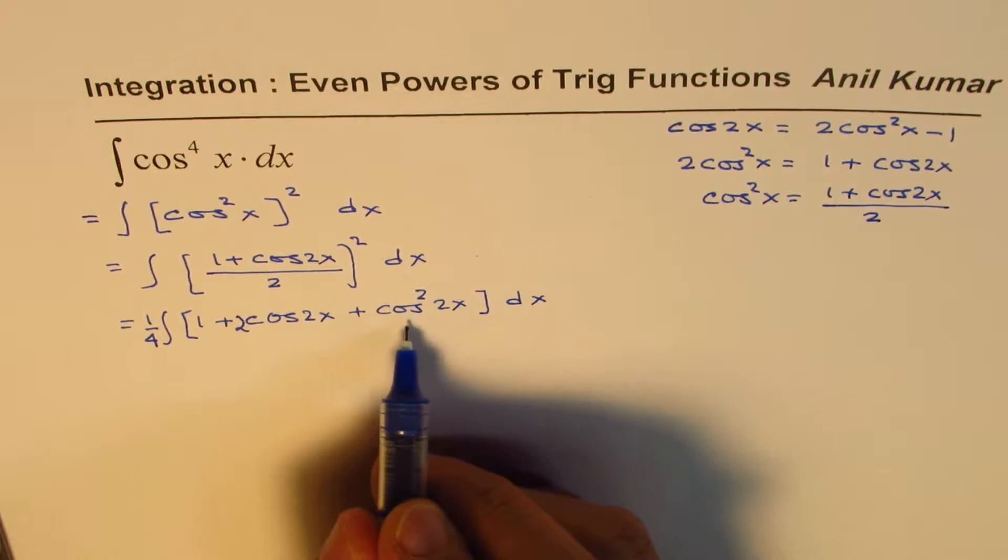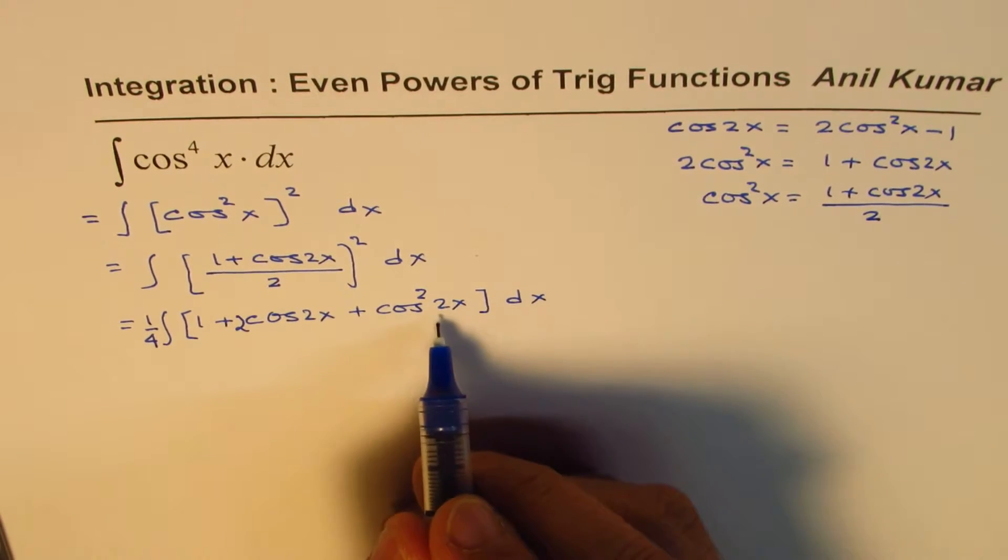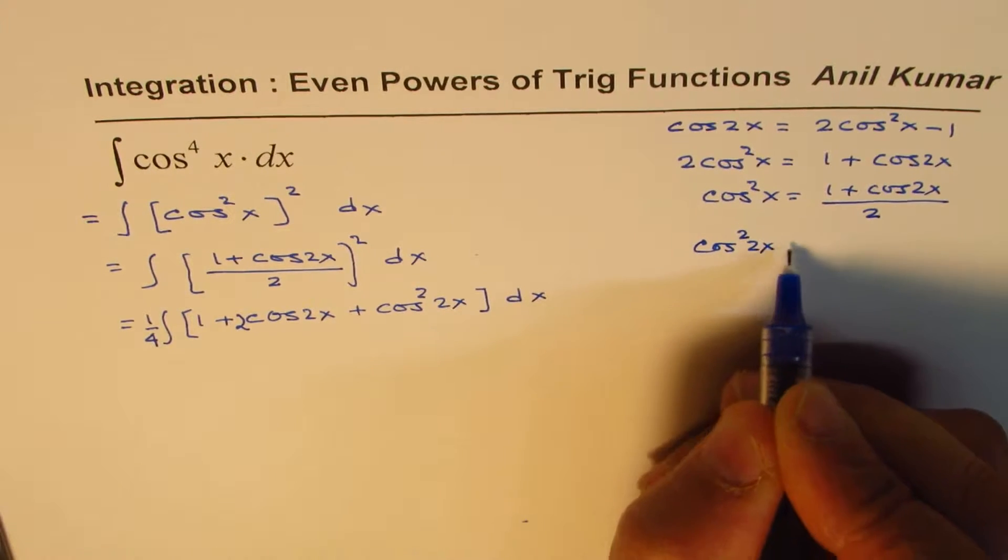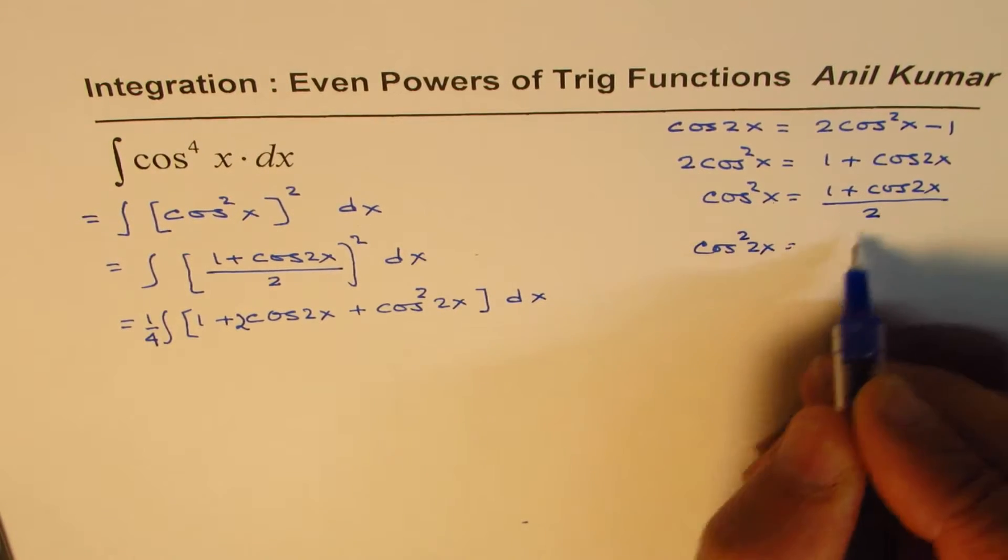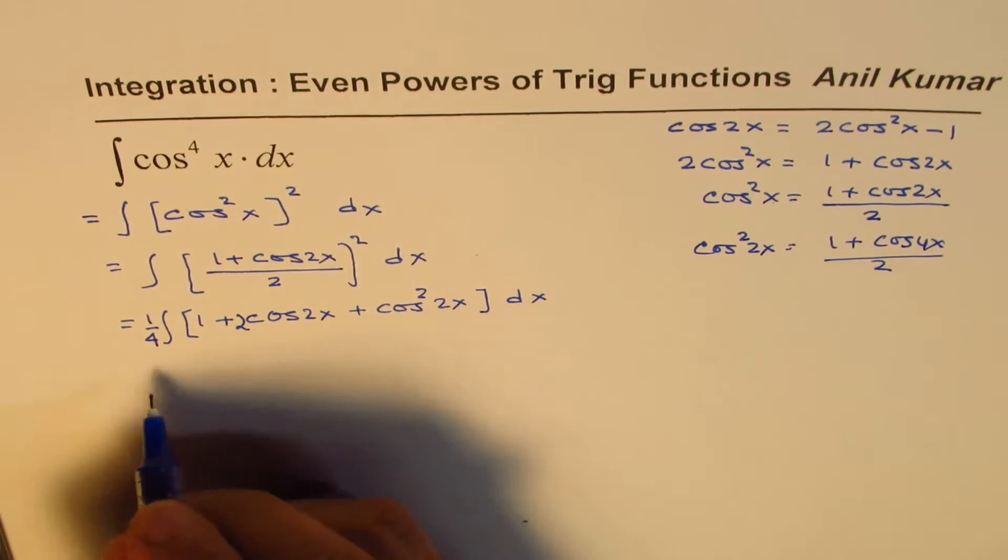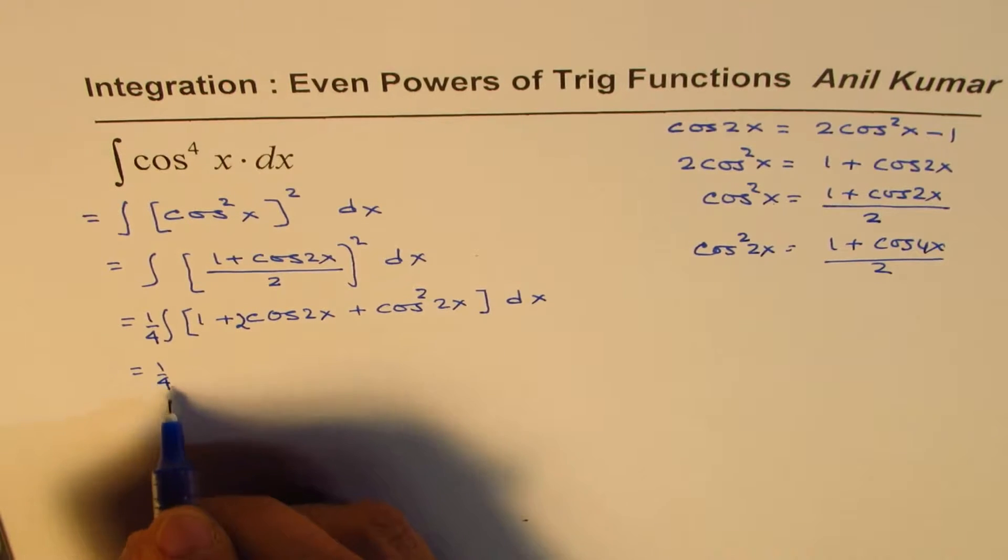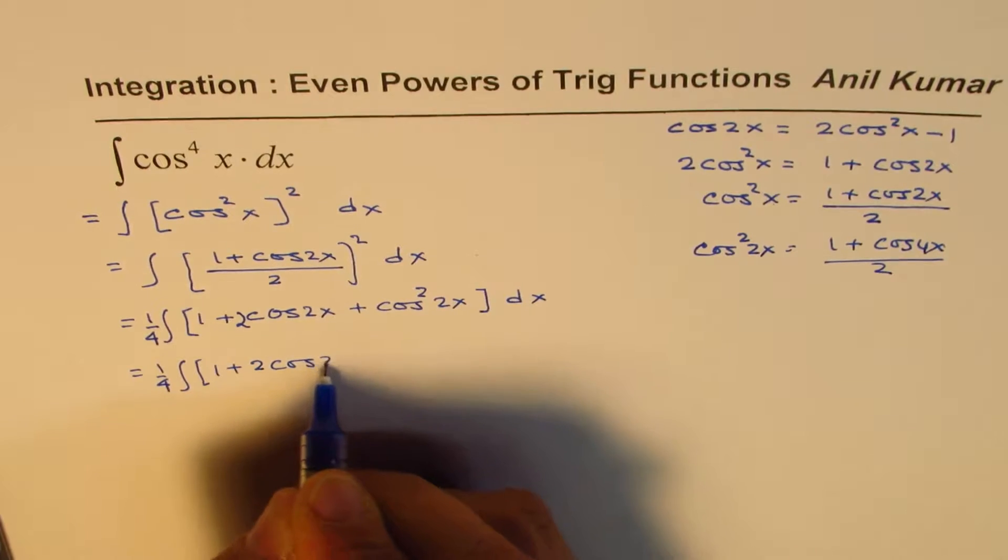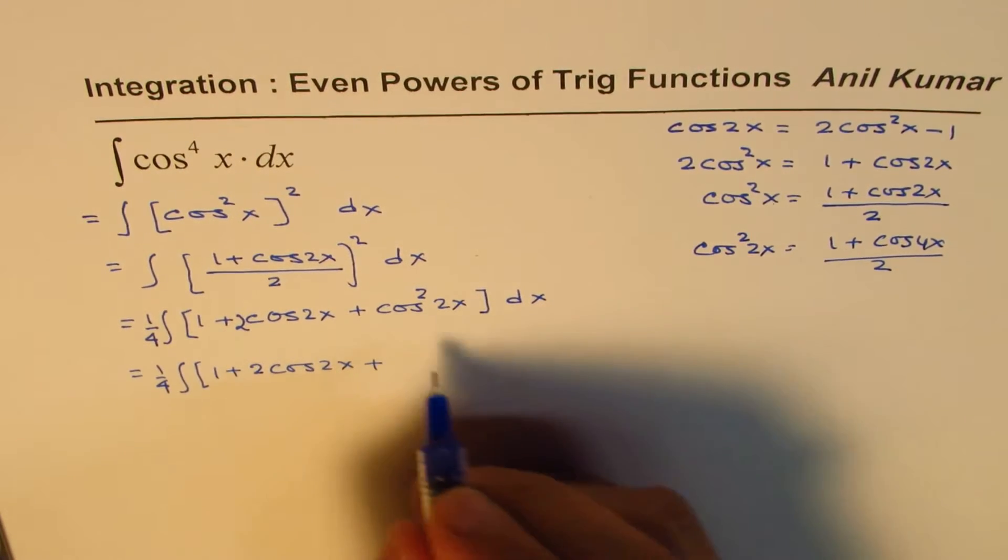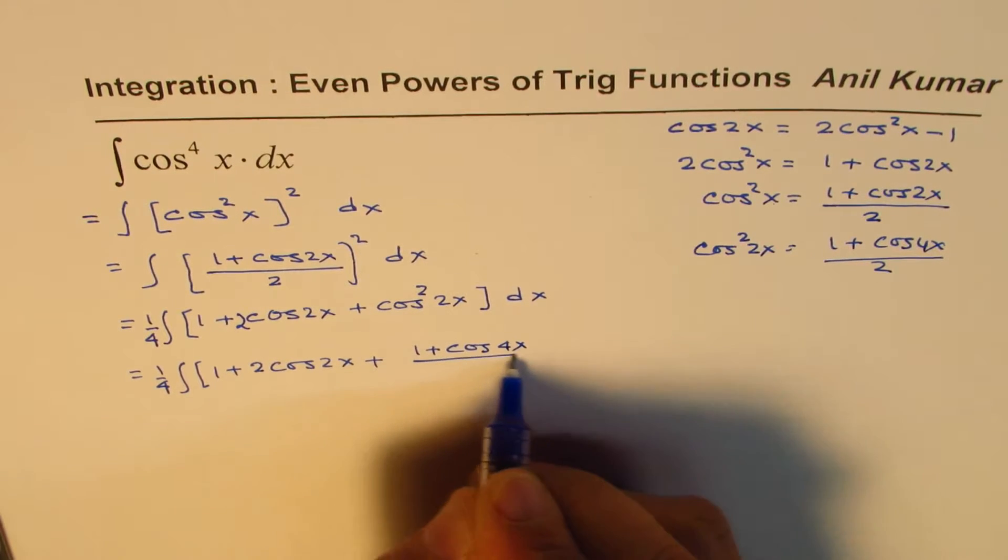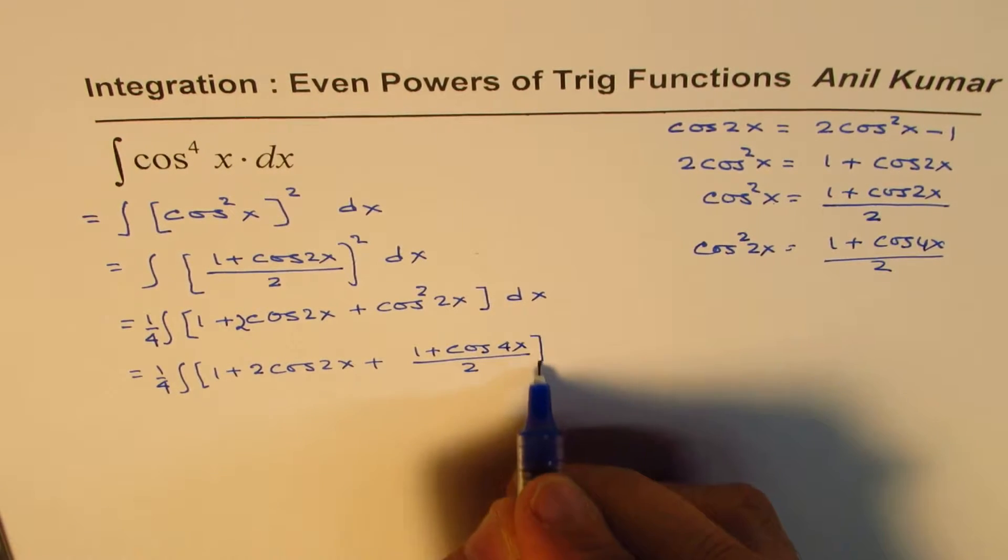We again have cos²(2x), so we apply the formula again. For the double angle, we replace x with 2x, giving (1 + cos(4x))/2. Substituting, we get 1/4 ∫(1 + 2cos(2x) + (1 + cos(4x))/2) dx.